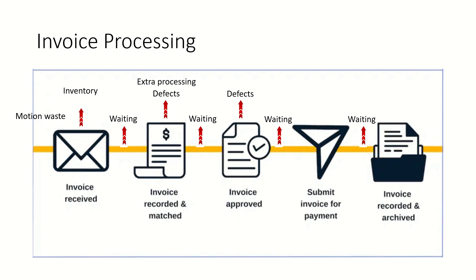There were defects at these particular process steps. For example, the person processing and recording the invoice made errors — they entered the wrong date, wrong amount, or the wrong vendor name. Additionally, when we looked at the system, there were some licenses procured by the AP team that were not being utilized. They were not used the entire year and those licenses were wasted. It would have enhanced their process efficiency if those licenses had been used — that is non-utilizing talent of the machine.